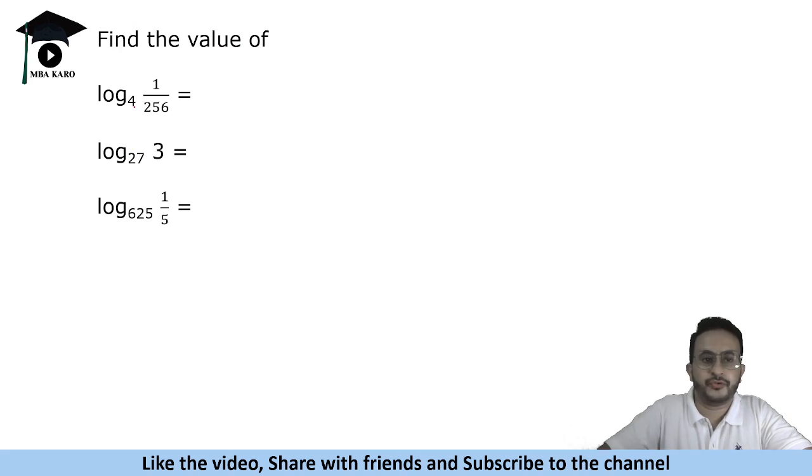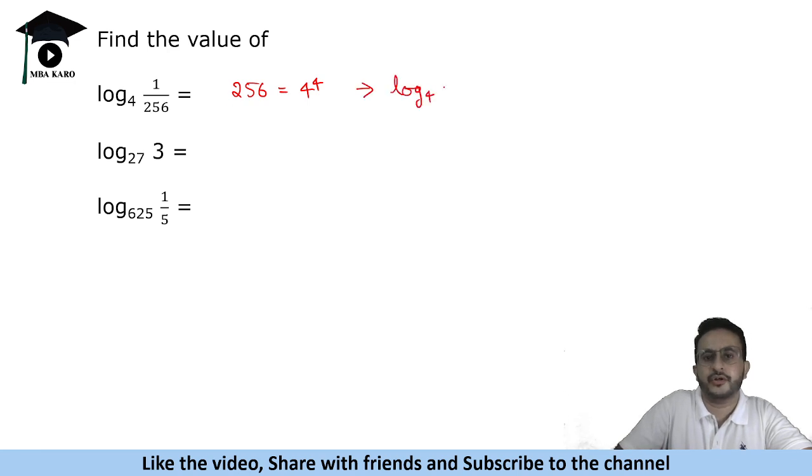Now let us look at some more examples. Log₄(1/256). We know that 256 is 4 to the power 4. When we switch 4 and 256, if we have 4 raised to the power 4 is 256, it means that log₄256 will be equal to 4. Now what we are doing is taking the reciprocal of this. When we take the reciprocal, this value will be equal to minus 4. So log₄256 is 4; we are taking reciprocal of it, so the answer is minus 4.